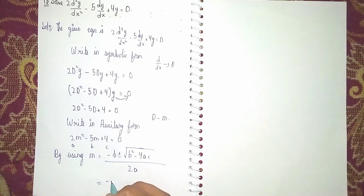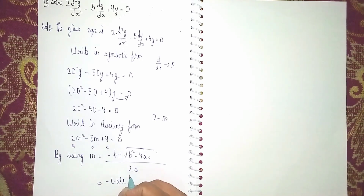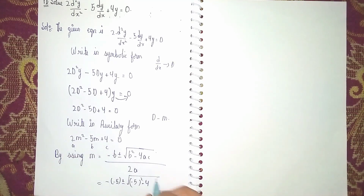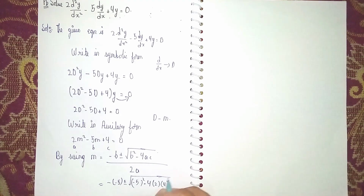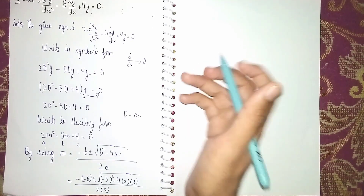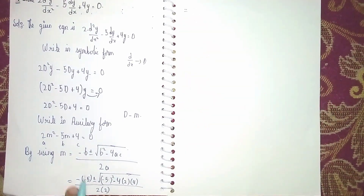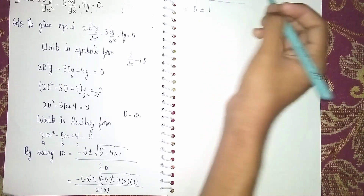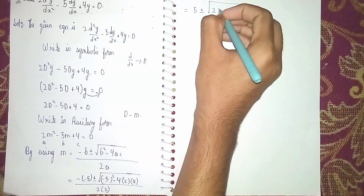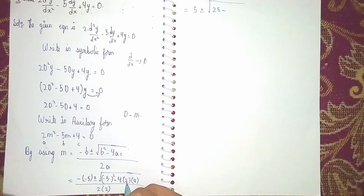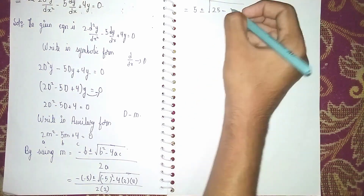Substituting: minus into minus 5 is plus 5, plus or minus under root of minus 5 squared minus 4 into 2 into 4, divided by 2 into 2. So it becomes 5 plus or minus under root of 25 minus 32, divided by 4.